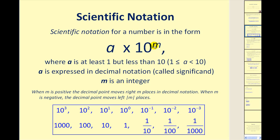Looking at the power of 10: if M is positive, we'll be multiplying by numbers that are larger than 1. Therefore, when M is positive and we convert to decimal notation, the number will be larger than the value of A. If we're multiplying by a negative power of 10, we would multiply A by some fraction, and if we multiply A by a number less than 1, the result will be less than A.